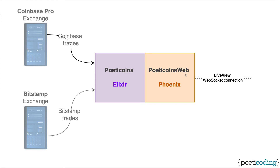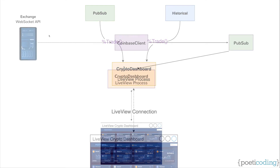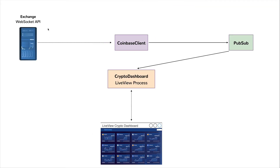Let's now focus on the web and Live View part. When a user connects to our dashboard, a Live View process is spawned. To render the widgets with the prices and the chart, the Live View process gets the most recent trades from the historical process and subscribes to the PubSub topic to get new trades.